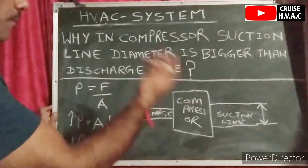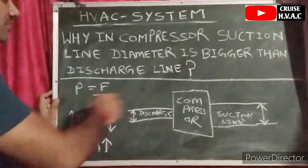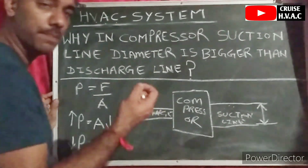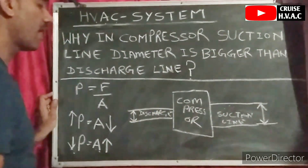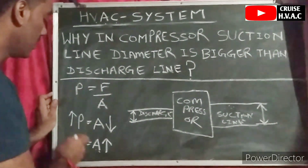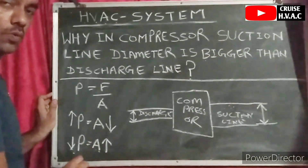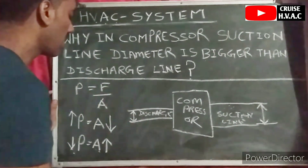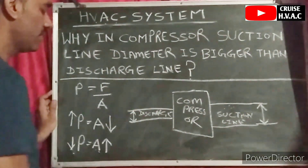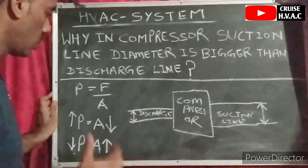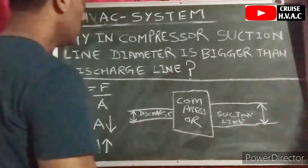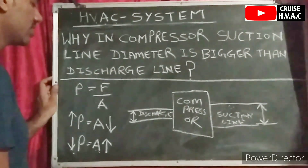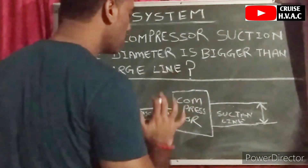On the discharge line, the refrigerant is in high pressure, high temperature vapor form. When the pressure is high, the area is low — that's why the diameter of the discharge line is lower compared to the suction line. The density of the refrigerant is also high in the discharge line.